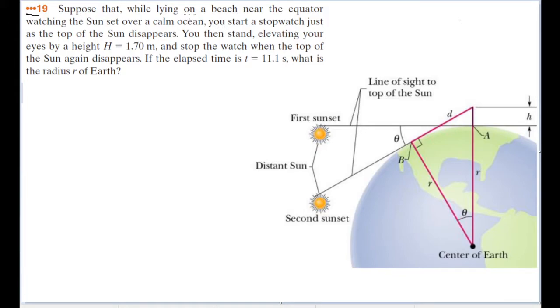Suppose that while lying on a beach near the equator, watching the sun set over a calm ocean, you start a stopwatch just as the top of the sun disappears. You then stand, elevating your eyes by a height of 1.7 meters, and stop the watch when the top of the sun again disappears. If the elapsed time is 11.1 seconds, what is the radius of Earth?